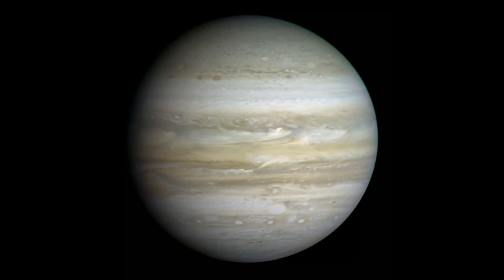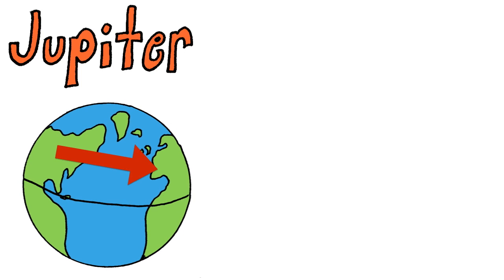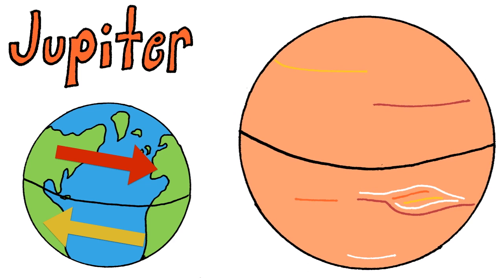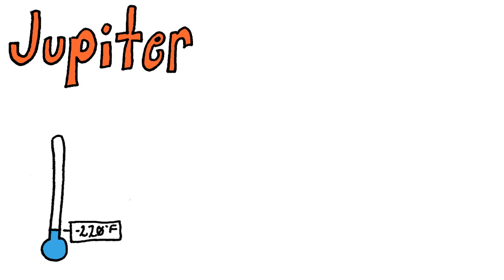You may have also noticed the stripes on Jupiter. These are caused by the planet's jet streams. There are two jet streams here on Earth, one in the Northern Hemisphere and one in the Southern Hemisphere. However, there are about 30 jet streams on Jupiter, each ripping through the atmosphere in different directions. It's also worth noting that the atmosphere on Jupiter maintains a balmy negative 220 degrees Fahrenheit, which allows the atmosphere made primarily of ammonia to freeze over.